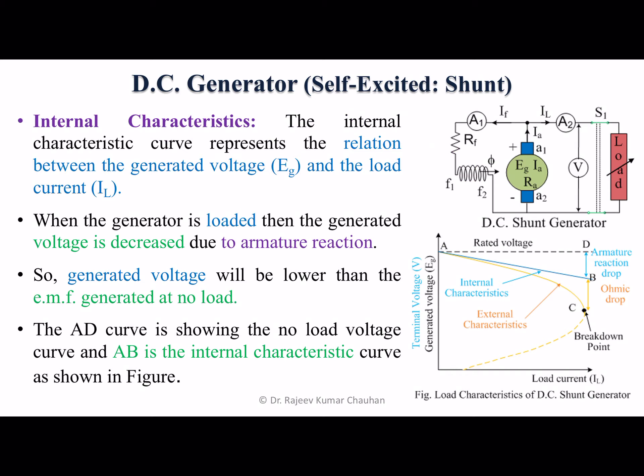Internal characteristics: the internal characteristics curve represents the relation between the generated voltage and load current IL. When the generator is loaded, then the generated voltage is decreased due to armature reaction, so the generated voltage will be lower than the EMF generated at no load. The AD curve is showing the no load voltage curve and AB is the internal characteristics curve as shown in figure.